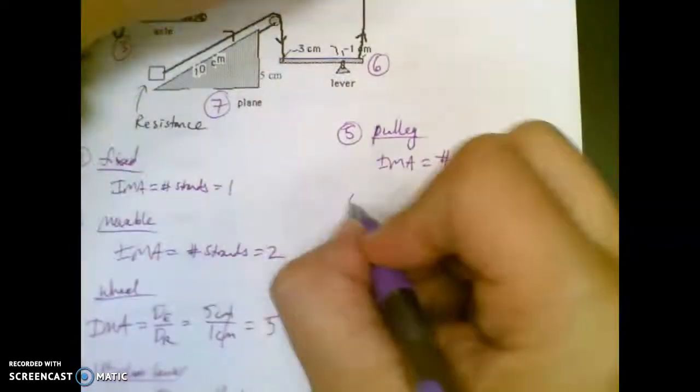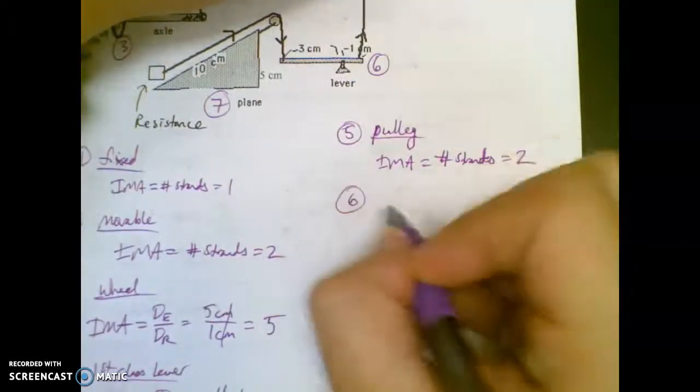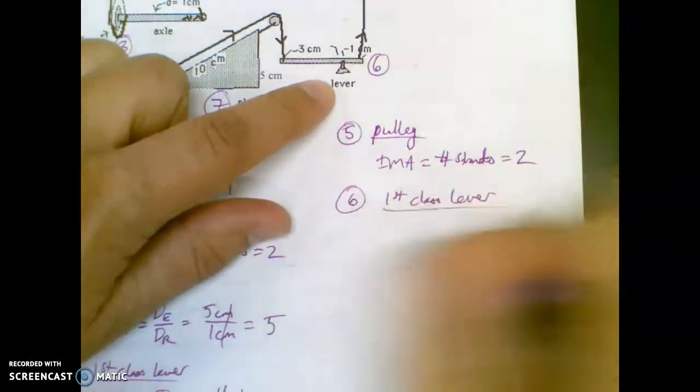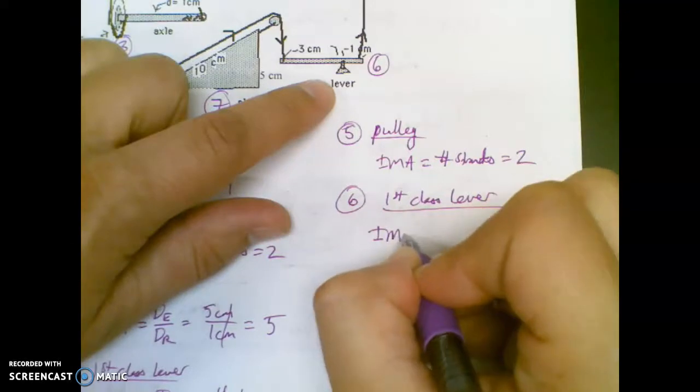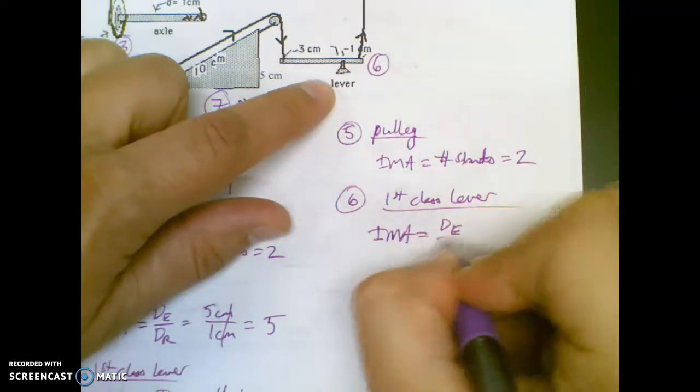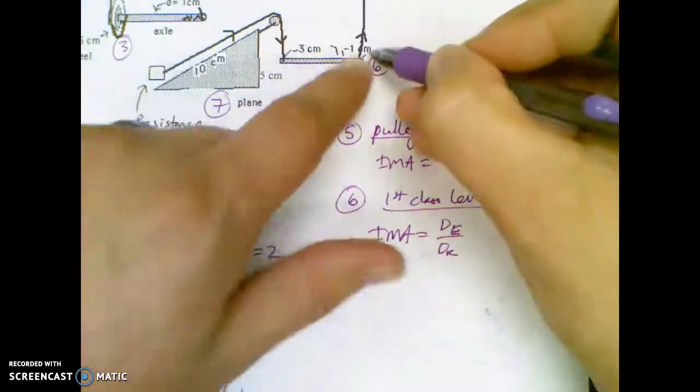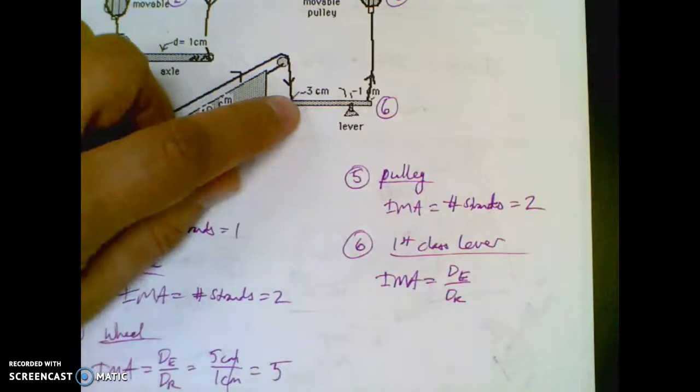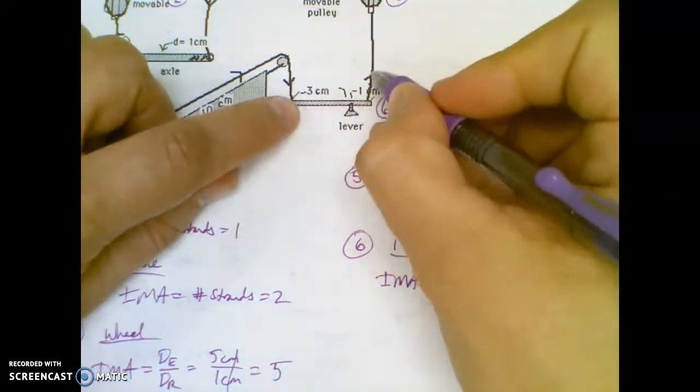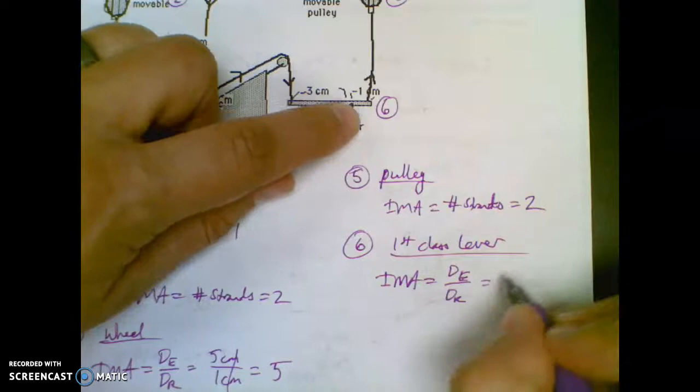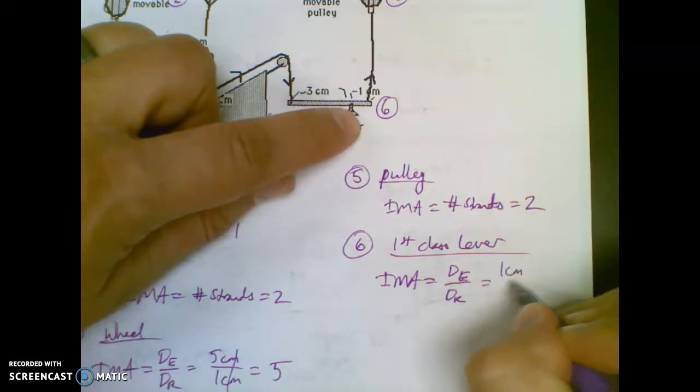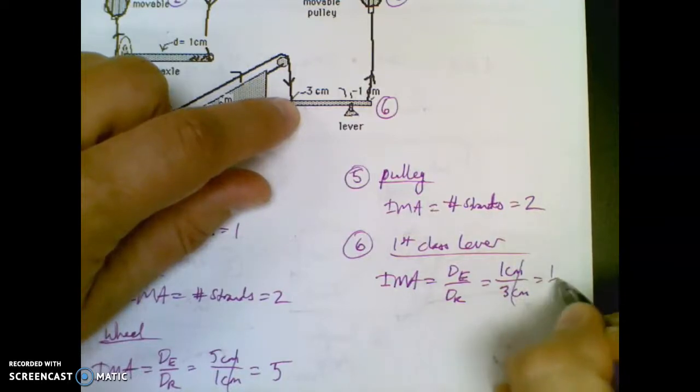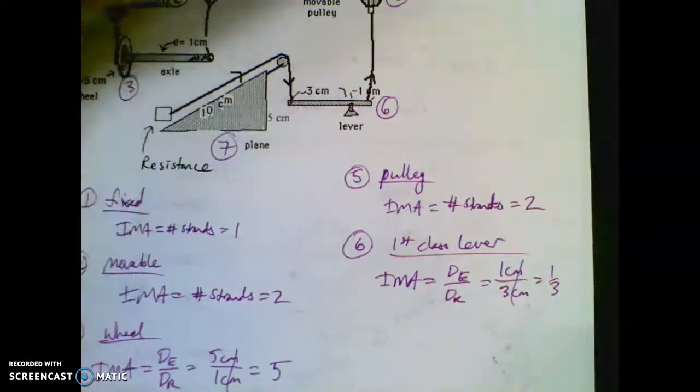Okay, now we're down to six. We're almost there. Number six, we have another first class lever. IMA equals DE over DR. Now this time your effort's on this side, because here's where the original pull comes from. And this is resisting it, this string over here is resisting. So it's pulling up here, it's pulling down there. So your DE is one centimeter, your DR is three centimeters. So you get one third as your IMA for that.